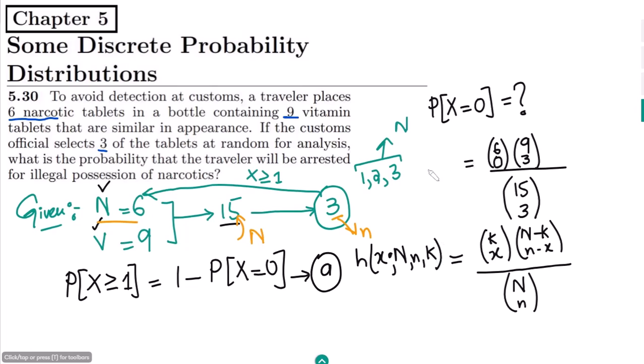This formulation would become h of 0 (the value of x), 15 (the value of N), 3 (the value of small n), and k which is here 6, this is the value of k. So we have to find it out and then put all these values here.